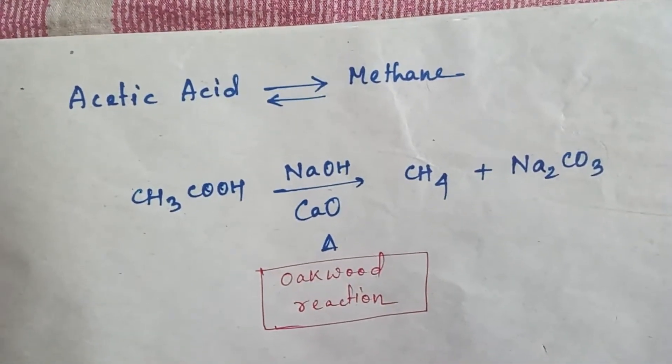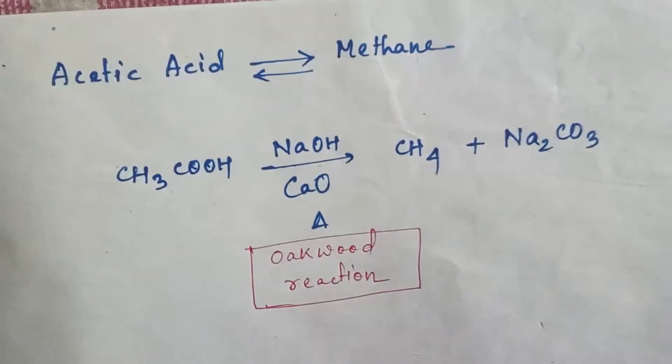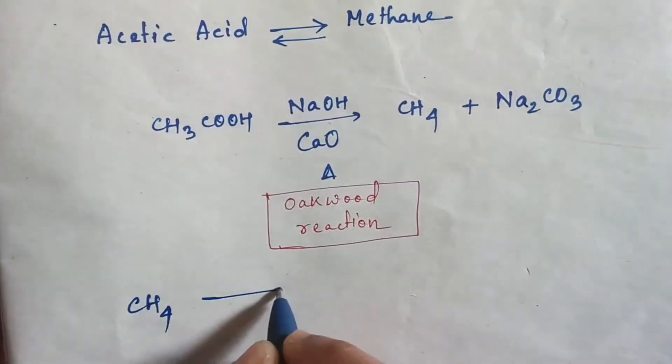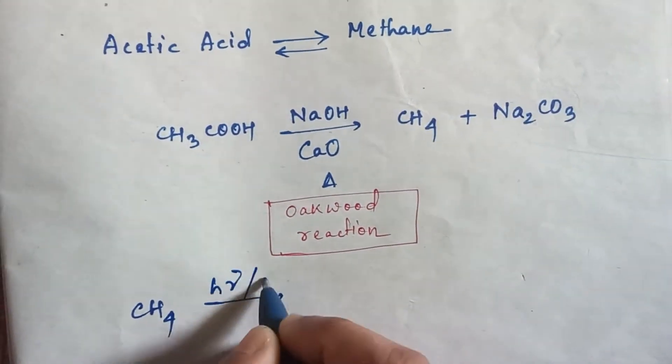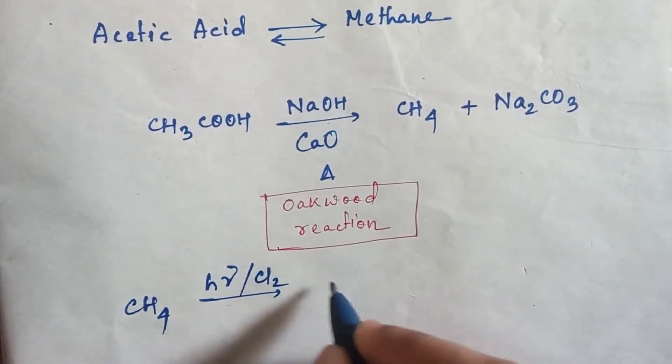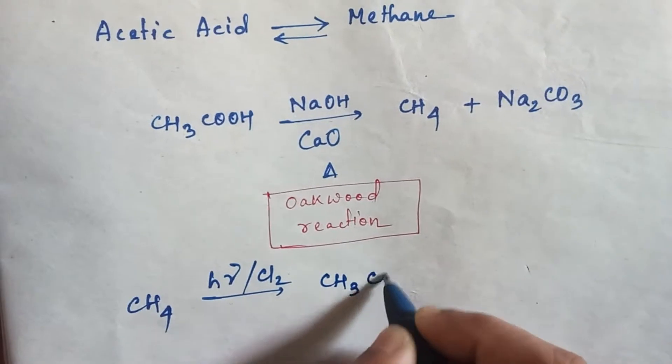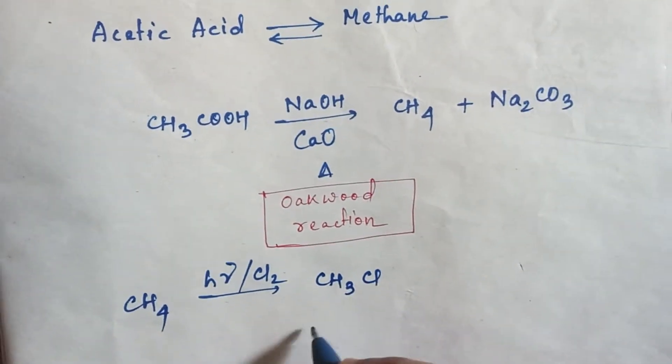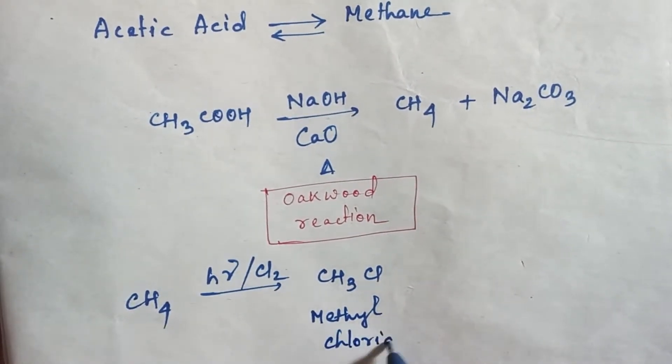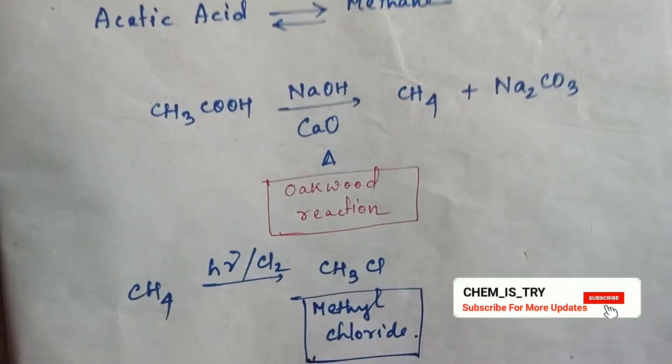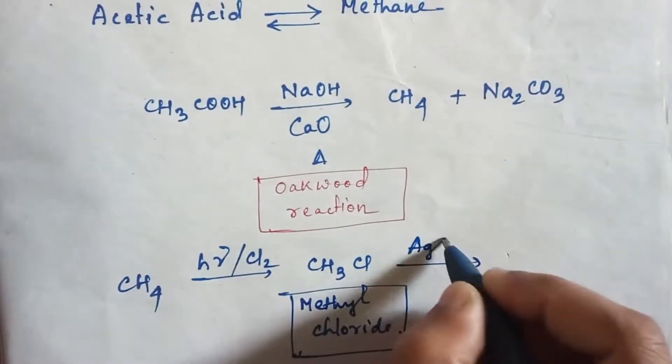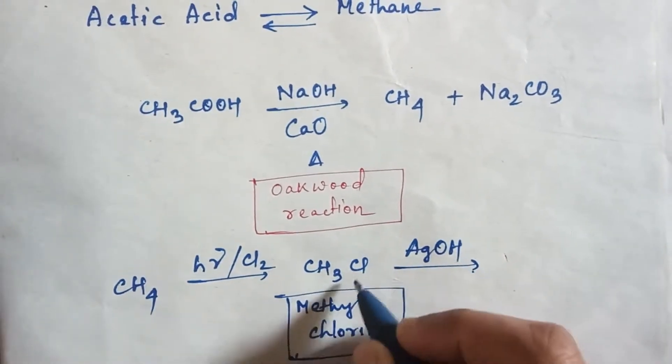Now let's see the reverse process, from methane to acetic acid. First write the formula of methane. If you write here hν and Cl2, then one hydrogen will be replaced by one chlorine atom and the product will be CH3Cl, methyl chloride.